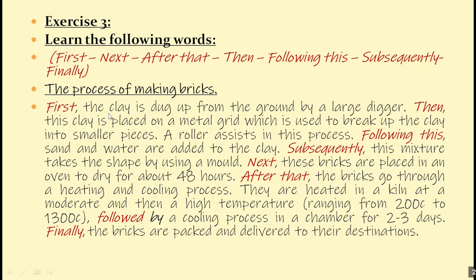Like this example — we're talking about the process of making bricks. First, the clay is dug up from the ground by a large digger. Then this clay is placed on a metal grid, which is used to break up the clay into smaller pieces. A roller assists in this process. Following this, sand and water are added to the clay. Subsequently, this mixture takes the shape by using a mold. Next, these bricks are placed in an oven to dry for about 48 hours. After that, the bricks go through a heating and cooling process — they are heated in a kiln at a moderate and then high temperature, ranging from 200 to 1300, followed by a cooling process in a chamber for two to three days. Finally, the bricks are packed and delivered to their destinations.